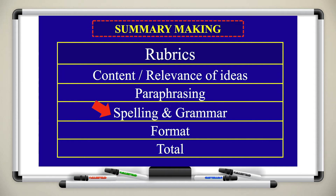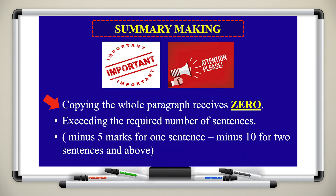These four paraphrasing techniques will help you. Then we have spelling and grammar — pay attention to these. Last but not least is format: your summary should be in a paragraph, not in bullet points. Important: copying the whole paragraph receives a zero. The question only asks for four sentences. Also, if you write five sentences instead of four, you lose five marks. If you write six sentences or more, you lose ten marks.